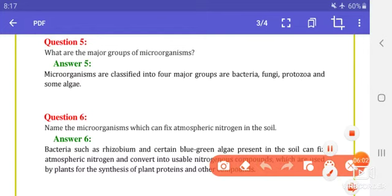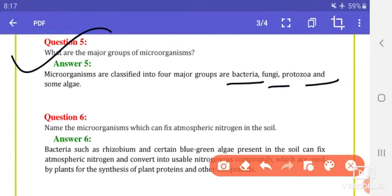Next is, what are the major groups of microorganisms? Microorganisms are classified into four major groups. Microorganisms have four groups students: bacteria, fungi, protozoa, and some algae.